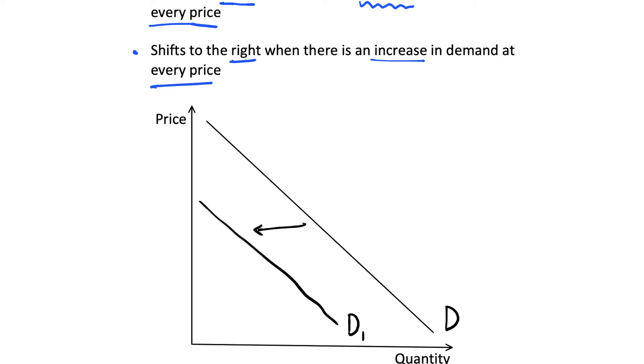But yeah, there's a decrease in demand at every price and we can say our price is on the vertical axis. So if we were to have price 1, we'd see that demand curve 1 is giving us this quantity Q1 of demand, whereas demand curve D, our original demand curve, is giving us a quantity Q2.